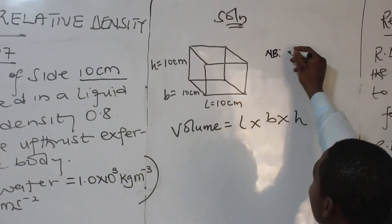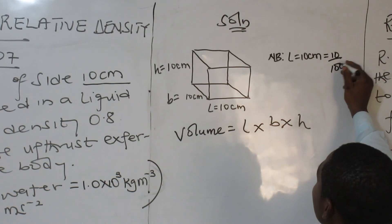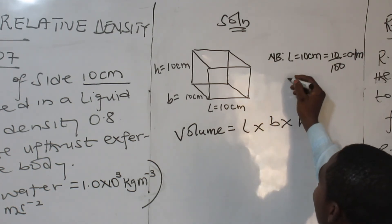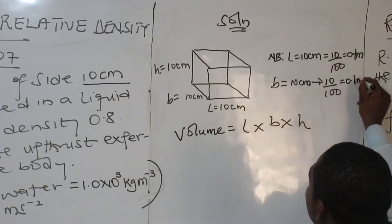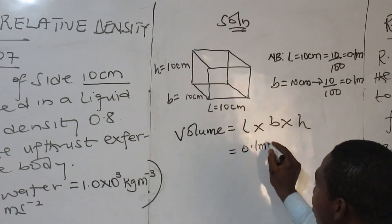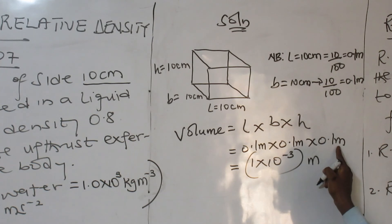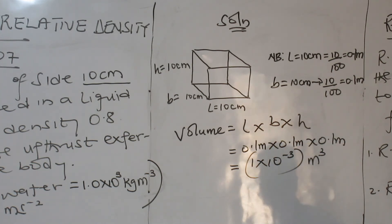So that is it — the question was lacking the volume explicitly stated, but we derived it. We first had to draw the cube and understand that all sides of a cube are equal. When you put them together, you get the volume. Now calculate the upthrust experienced by the body. Any time you are working in standard form, put values in brackets on the calculator. Let's proceed and work through this.